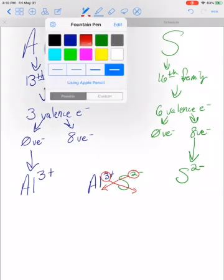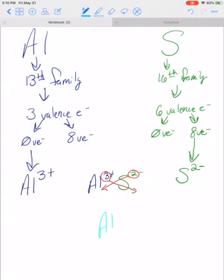And in the end, we're left with Al2S3. Al2S3. Because all we did was crisscross.